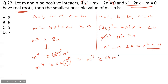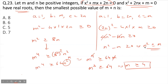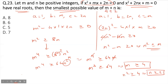Since m and n are positive integers, they are not zero, so we can cancel m from both sides to get m³ ≥ 64. Taking cube roots, m ≥ 4. Since n² ≥ m ≥ 4, we get n ≥ 2. The smallest value of m is 4 and smallest value of n is 2, so m + n = 4 + 2 = 6.